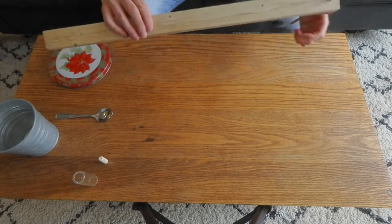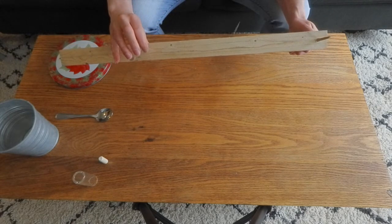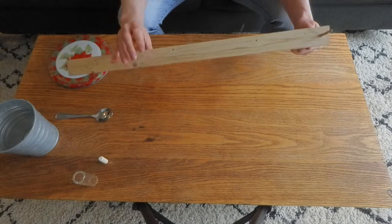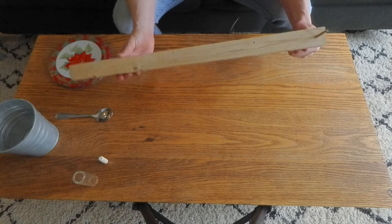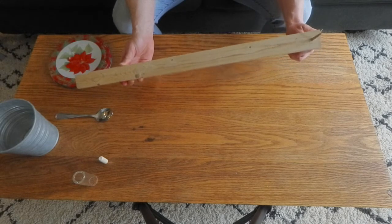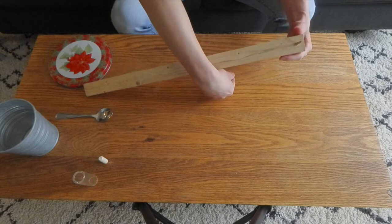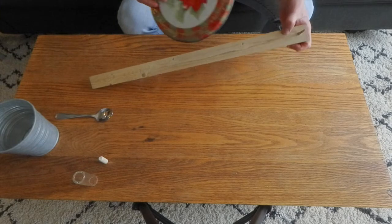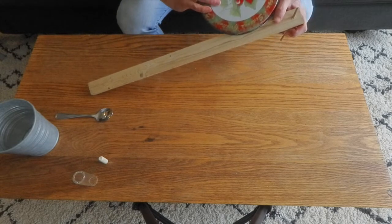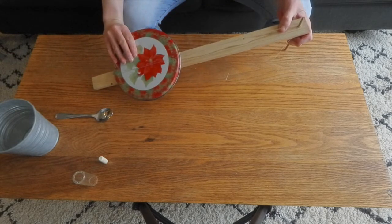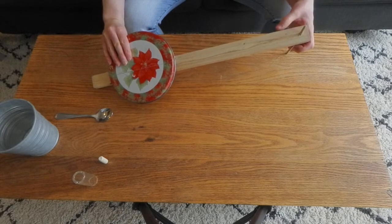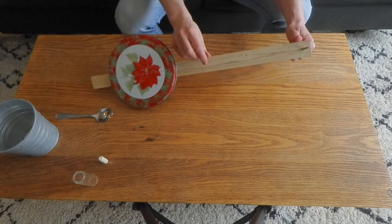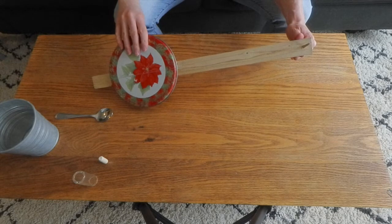Now our only job is to make that sound louder with our resonator. My resonator is the cookie tin lid, and I'm going to slide it under the string that's already tight. It might make some sound already like this—it's a buzzy, kind of fun little sitar sound. But what I want to do is make a clean sound.